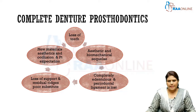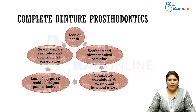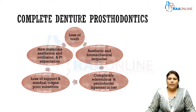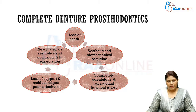This has led to complete edentulism and the periodontal ligament gets lost. Due to the loss of periodontal ligament, there is going to be a loss of support in the edentulous ridge, and residual ridges become a poor substitute for support of complete dentures. The advent of new materials has created a relationship between aesthetics, occlusion and patient expectation.